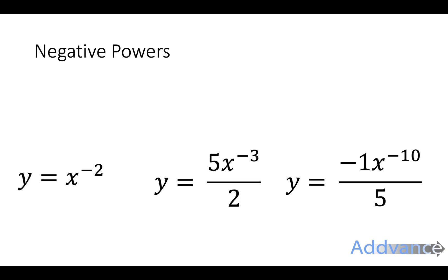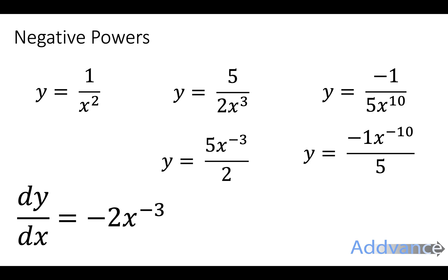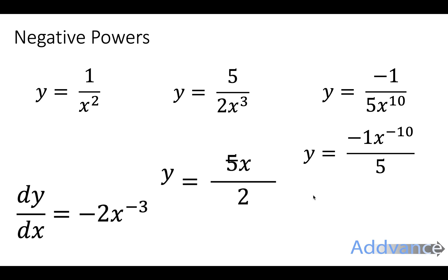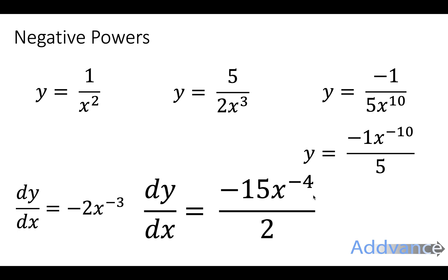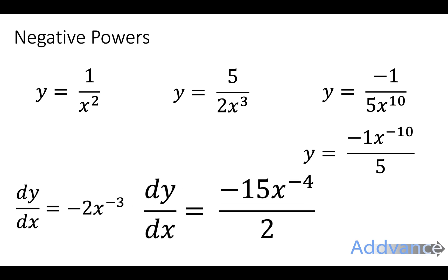Now you can differentiate as before. So y equals x to the power minus 2 — the minus 2 comes down, and then you take one off the power: minus 2 minus 1 is minus 3. Next, y equals 5x to the power minus 3 over 2 — the power comes down, minus 5 times minus 3 is minus 15, and minus 3 minus 1 is minus 4. So that gives the differentiated form, and that is the final answer.